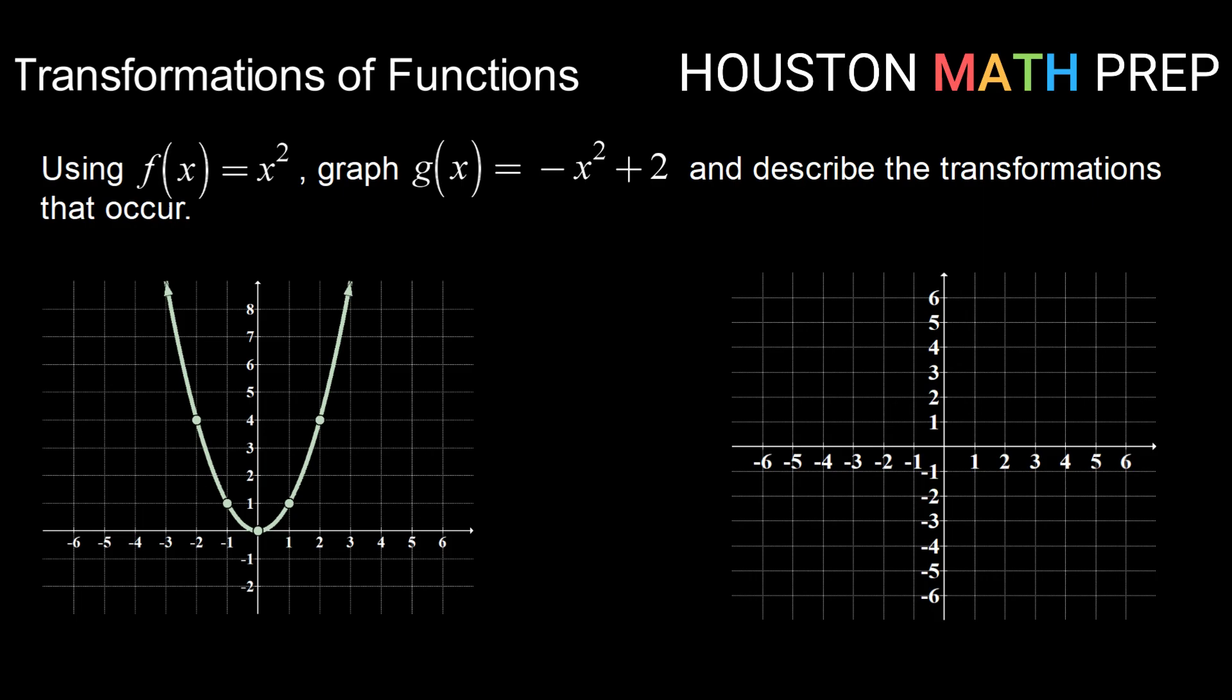Starting with our parent or library function f of x equals x squared, we want to graph g of x, which is negative x squared plus 2. And we're going to start that by describing the transformations that will occur.